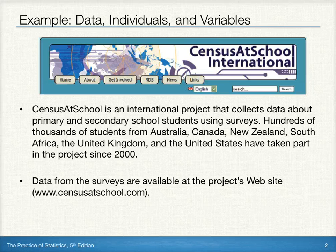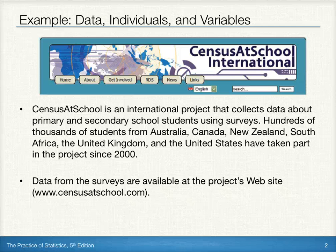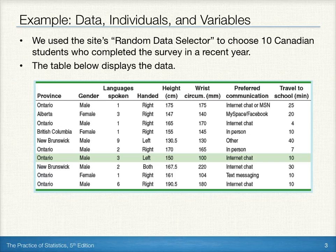Census at School is an international project that collects data about primary and secondary school students using surveys. Students from around the world have taken part in this project since the year 2000. Data from these surveys and more information are available at the project's website, www.censusatschool.com. The authors use the site's random data selector to choose 10 Canadian students who completed the survey in a recent year. The table below displays the data.